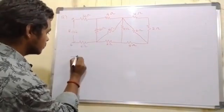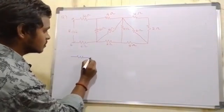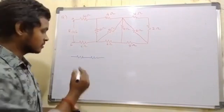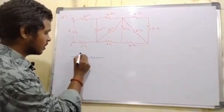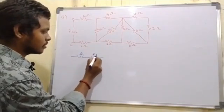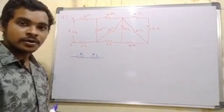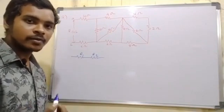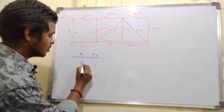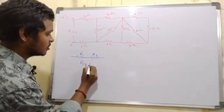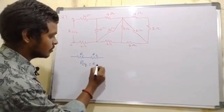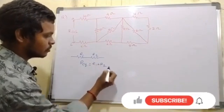We will find two resistances in series. For example, R1 and R2. We will find the equivalent resistance, which is R1 plus R2.